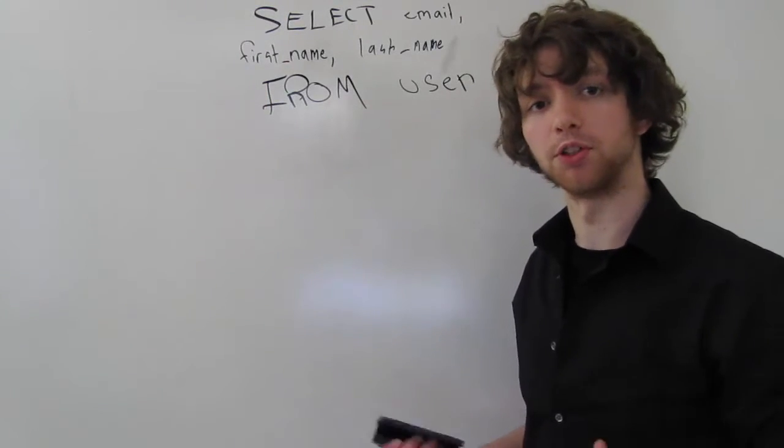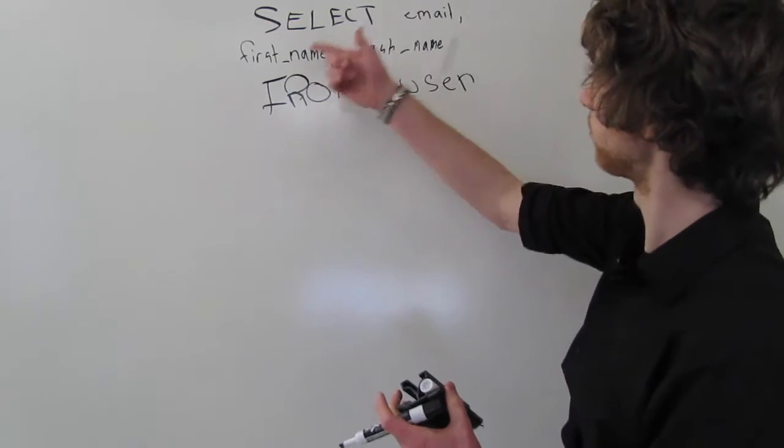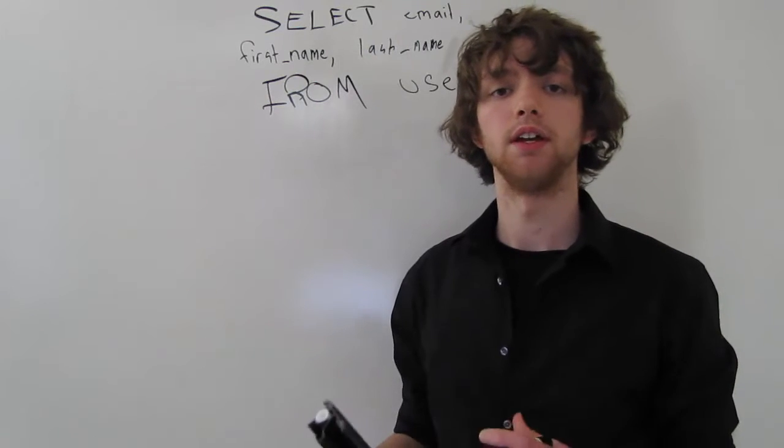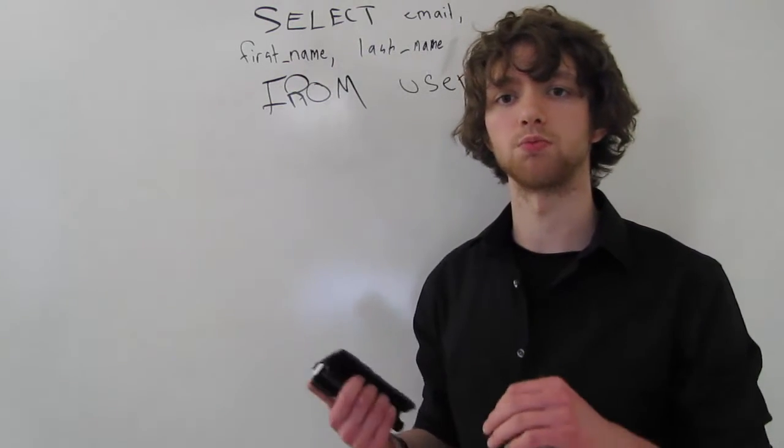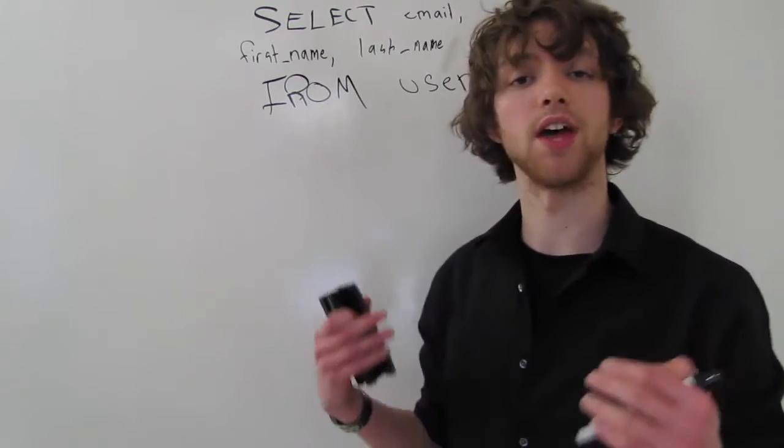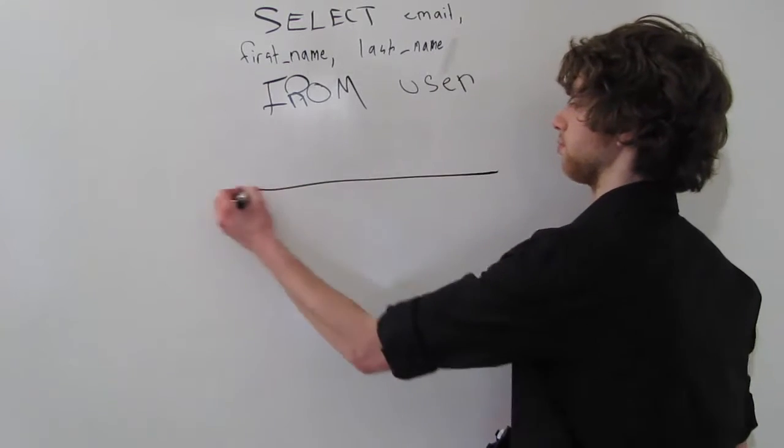So here's just an example of what you might say to a database. You're going to select the email, first name, and last name. When you use an alias with columns, not only do you change what the column is called, but it's going to change what it's presented as. So when you get that new structured view, that generated table, and it looks something like this...